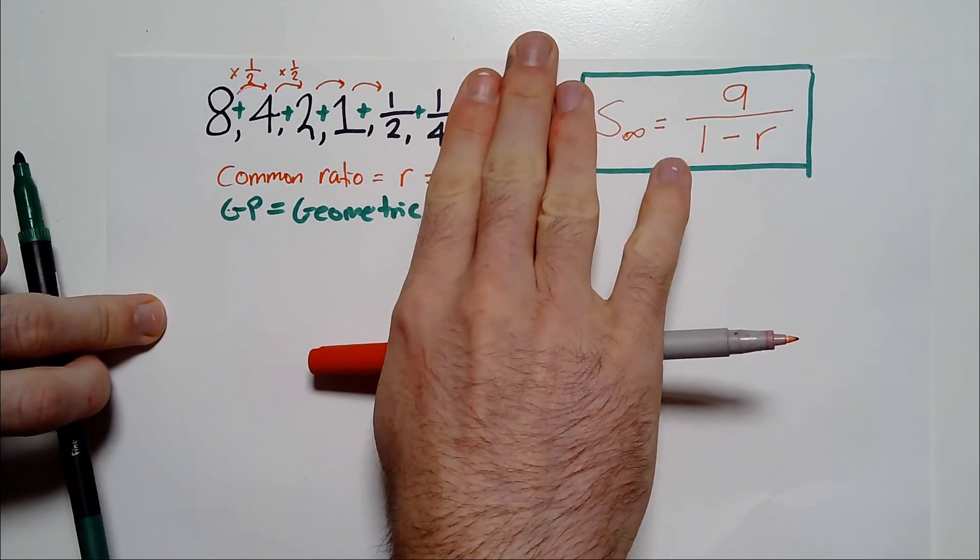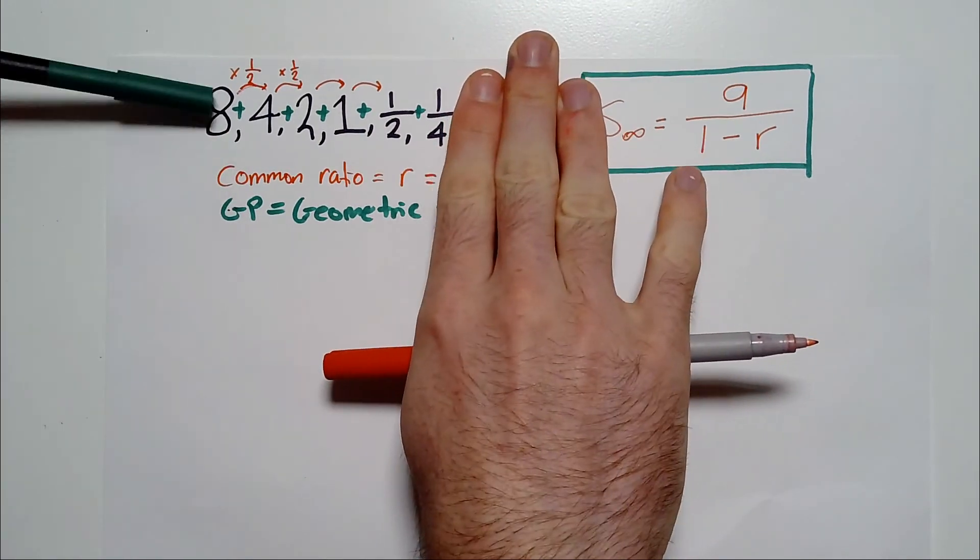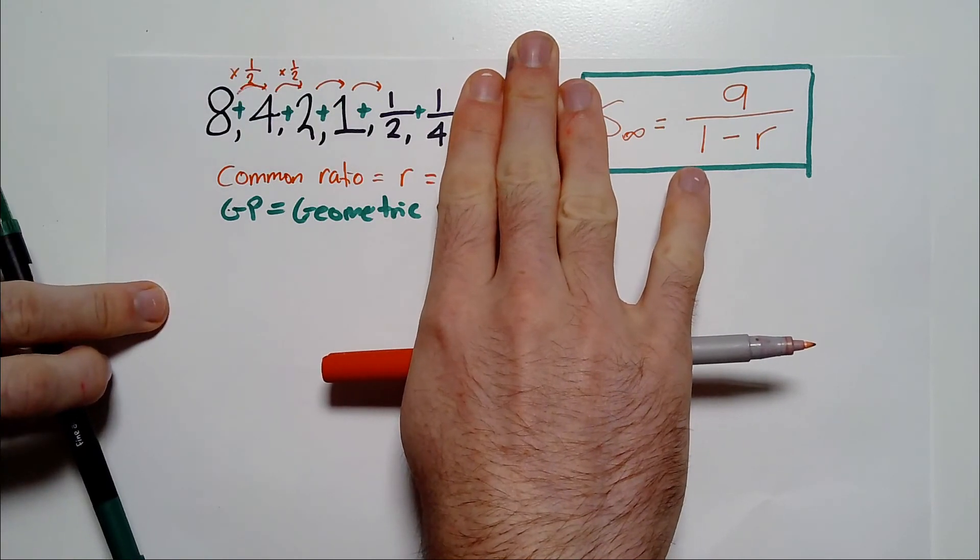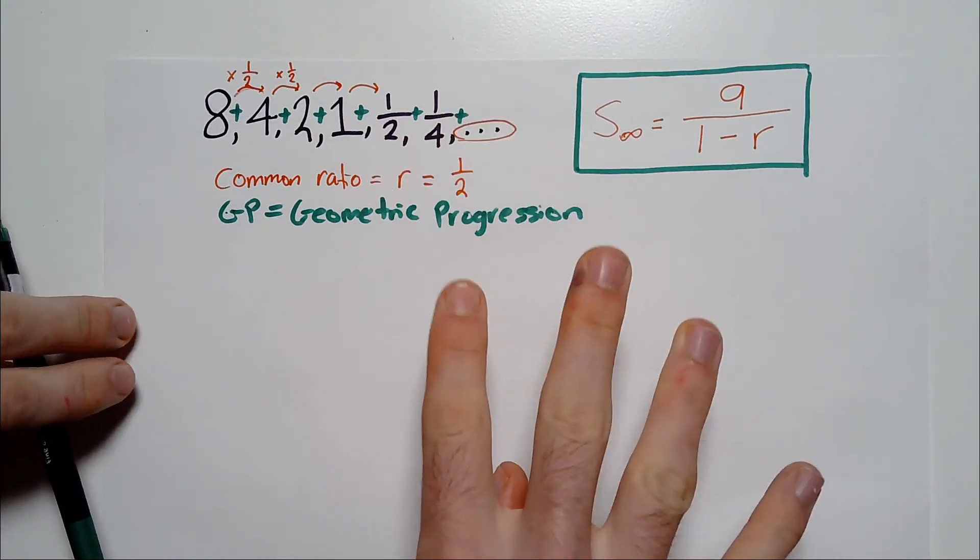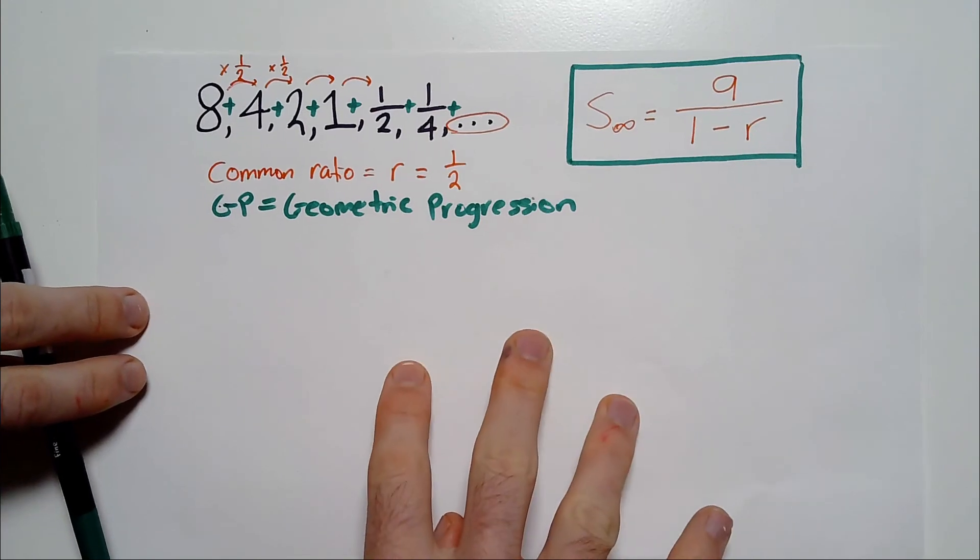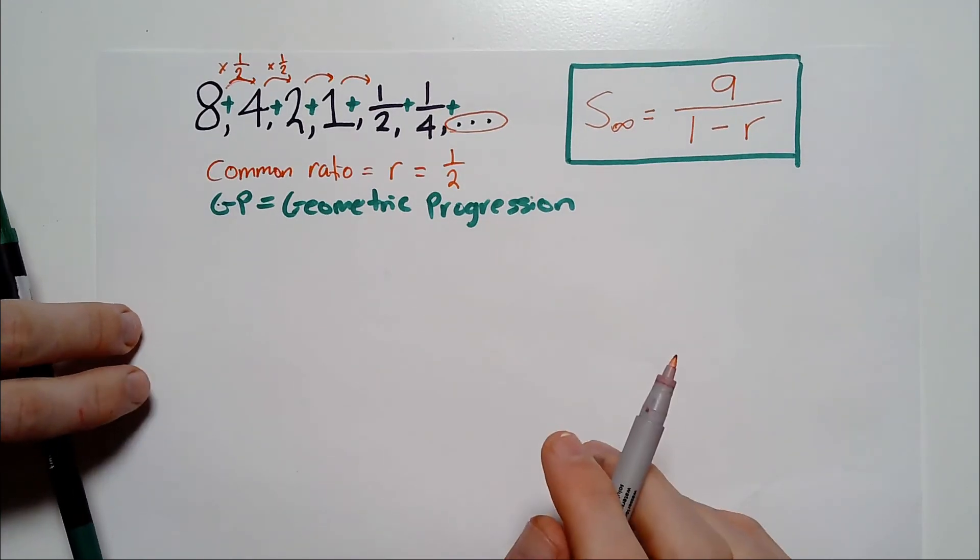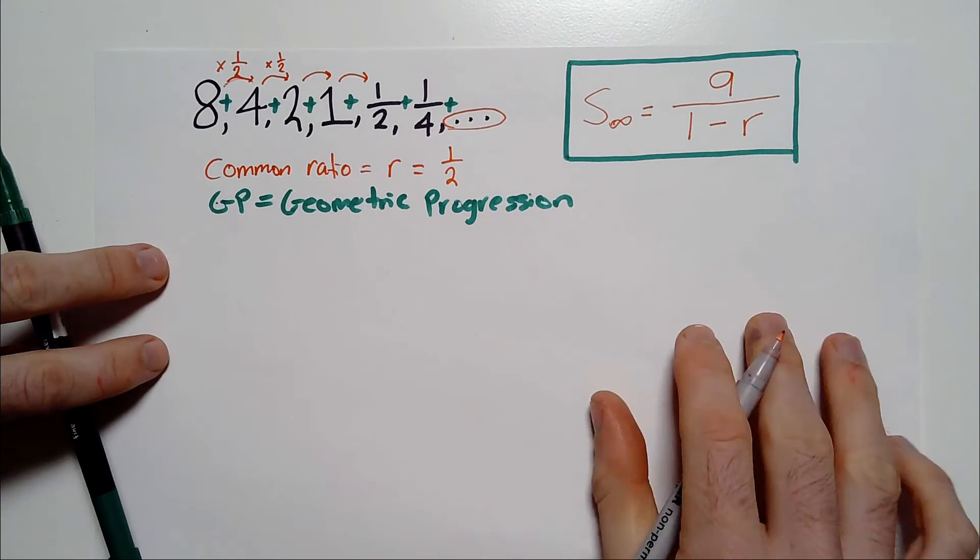If we cut the sequence off here, how many terms would we have? One, two, three, four, five, six. You would have a GP with six terms, and you would go and apply the regular formula for a geometric progression, or rather, for the sum of a geometric progression.